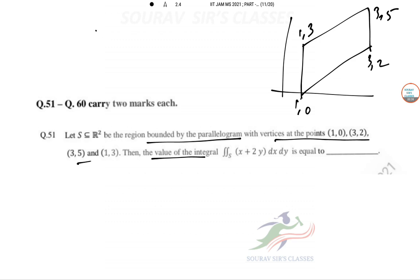Double integral: x equals 1 to 3, y equals x minus 1 to x plus 2, (x + 2y) dx dy. This is the formation. Now we are going to solve it.